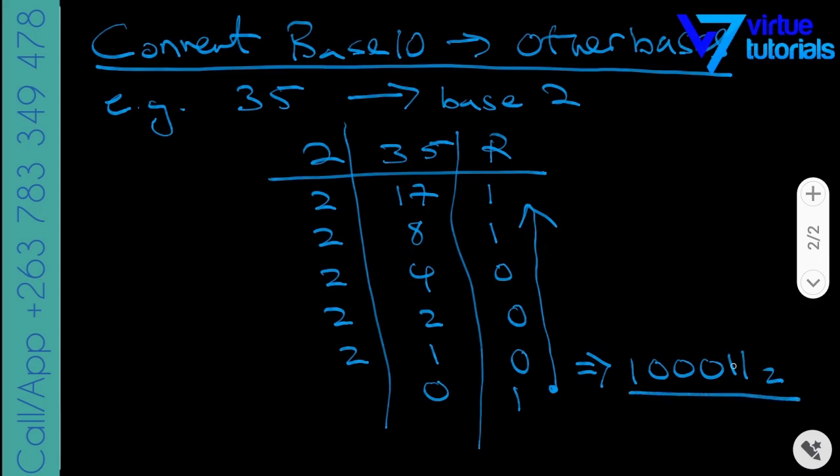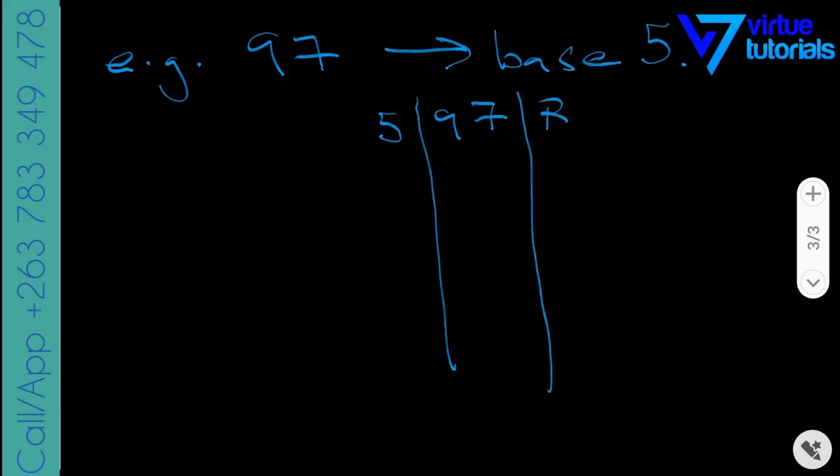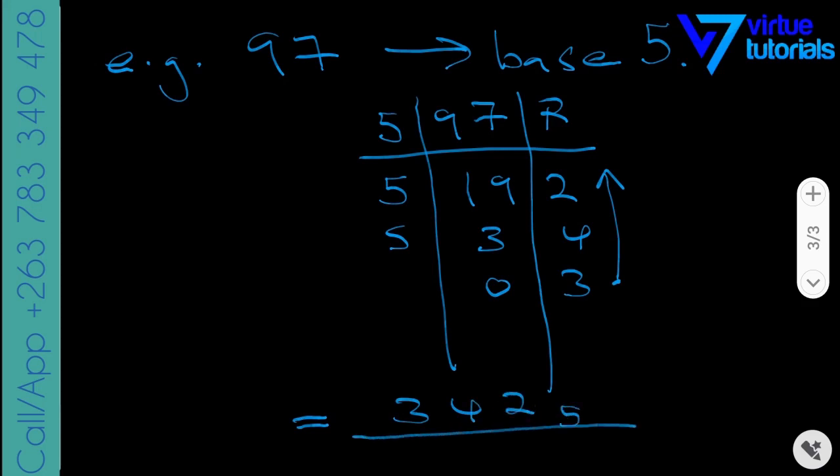Let's try another example. Let's have 97 and we want to convert 97 to base 5. So we follow the same procedure: divide 5 into 97 and then record the remainders. Again, my columns. So 5 into 97, that's going to be 19 remainder 2. 5 into 19, that's going to be 3 remainder 4. 5 into 3, it's 0 remainder 3. Then we read the number in the remainder column from bottom going upwards, and then your final result is going to be 342 base 5.